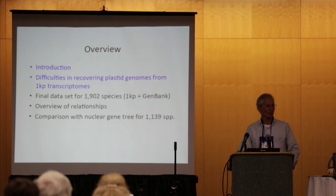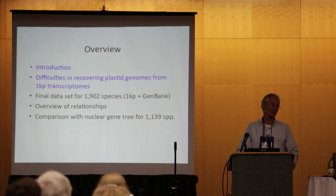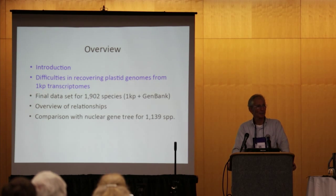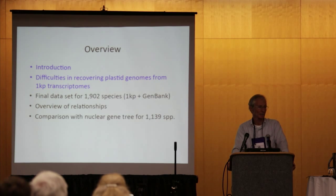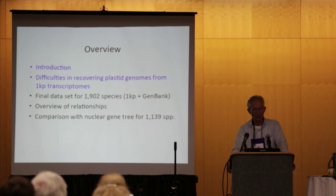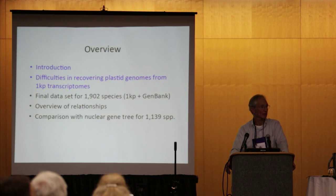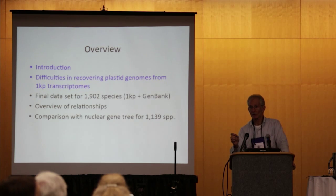Here's an overview. I'm going to talk a little bit about the difficulties in recovering Plastigena from 1KP transcriptomes — it's not as easy as we thought initially, there were a lot of challenges. Then I'll focus most of the talk on a final dataset that we've been analyzing for 1,900 species. This is both 1KP and data from GenBank. I'll overview relationships and then make some comparisons of the Plastigena to nuclear gene tree results for the very same set of 1KP taxa.